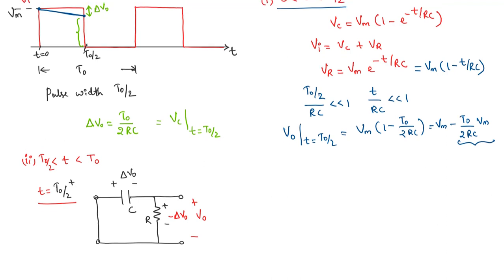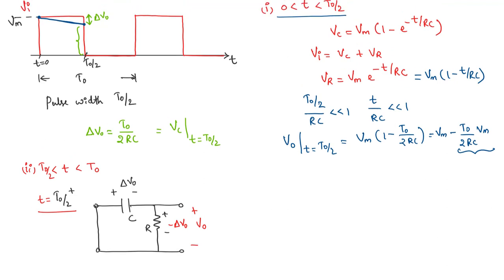We can show the output waveform: immediately after T0 by 2, the output voltage will be minus delta V0. As time progresses, the capacitor discharges through the resistor, so the voltage increases and becomes 0 by the time we hit the next period. Similarly, we can draw the waveform for the next cycles. This waveform is the output voltage waveform of the high pass RC circuit under the assumption that RC is very, very greater than T0 by 2.